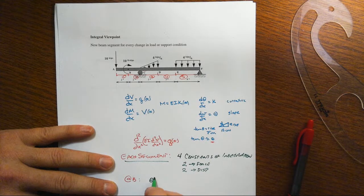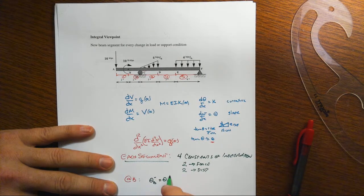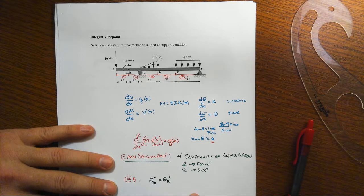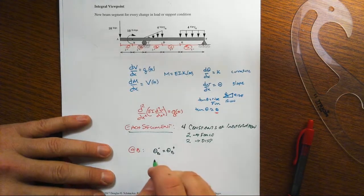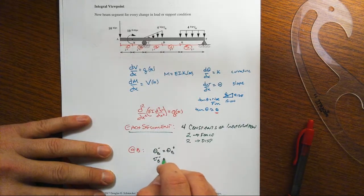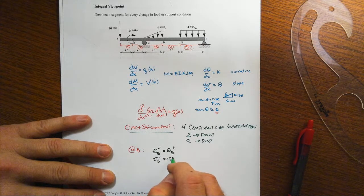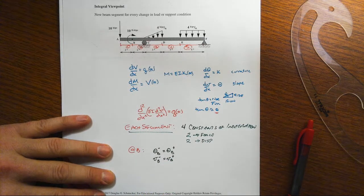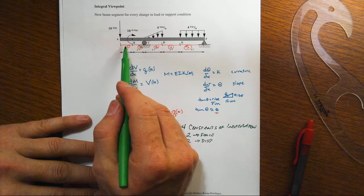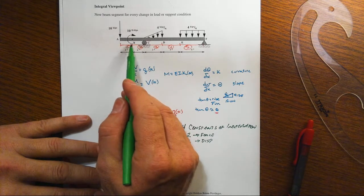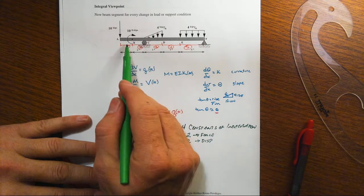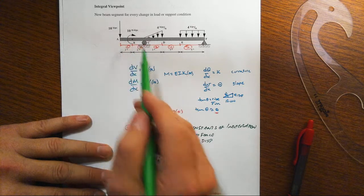However, what I was referring to before is, right at B, then we know from a displacement standpoint that the slope just to the left of B has to equal the slope just to the right of B. Transverse displacement to the left and to the right just immediately have to be equal to each other.